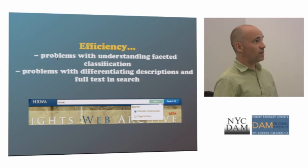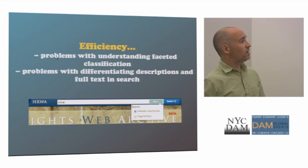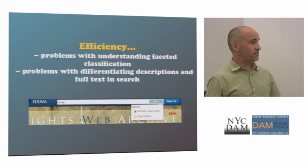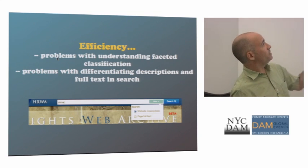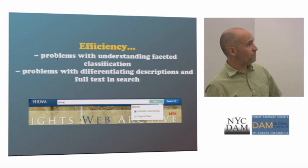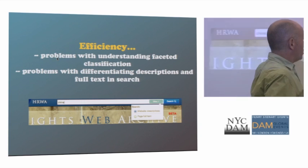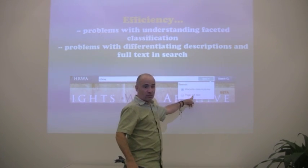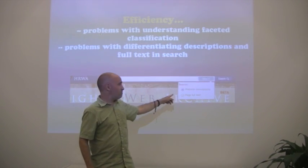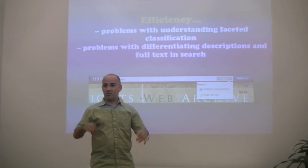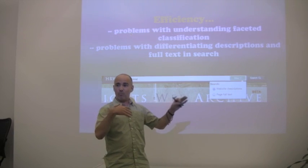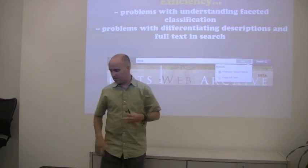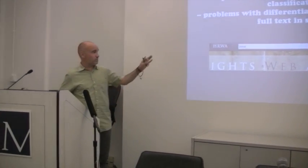On efficiency, there were problems understanding what faceted classification was — people just weren't getting it. There were also problems differentiating description search from full-text search. If people type in the name of a document they get millions of hits and don't know to go back because they've never seen this kind of system. This can probably be fixed by improving contrast, but it's an enormous problem right now.